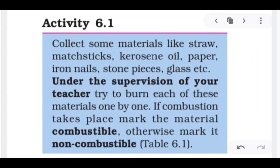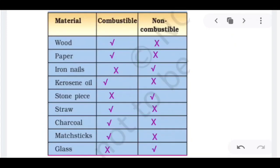Now we will do one activity 6.1. A very simple activity is there. Collect some materials like straw, matchsticks, kerosene oil, paper, iron nails, stone pieces, glass, etc. Now under the supervision of your teacher, try to burn each of this material one by one. If combustion takes place, mark the material combustible. Otherwise mark it non-combustible. Come to table number 6.1. This table shows the material, the combustible, and the non-combustible.